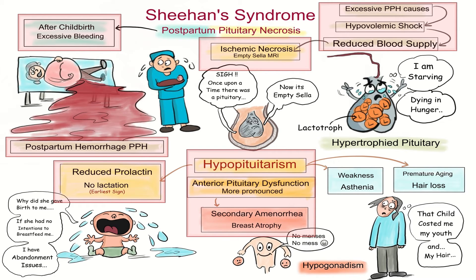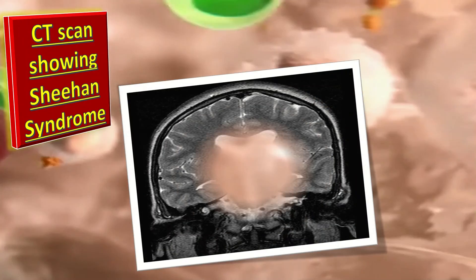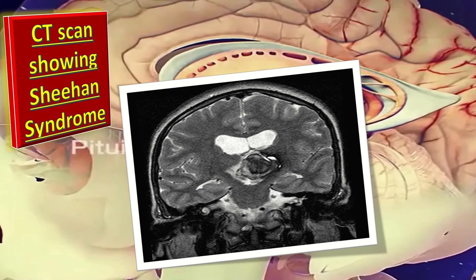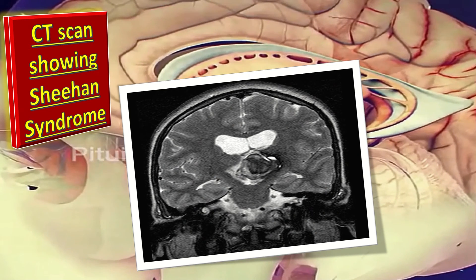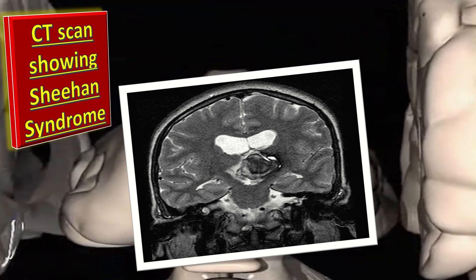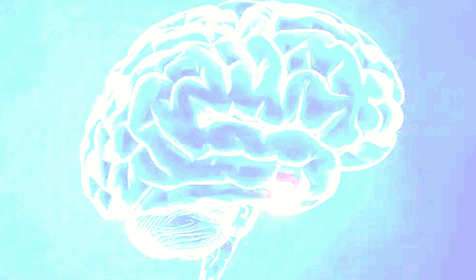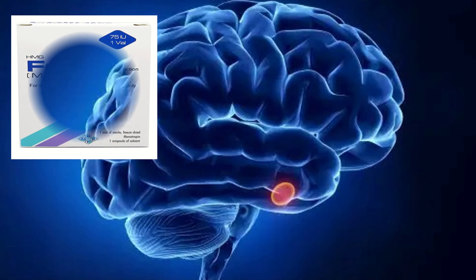Reduced prolactin or absence of lactation is the earliest sign of Sheehan syndrome. Later on, there is pituitary atrophy resulting in weakness, premature aging, and hair loss. This CT scan of the patient shows an enlarged pituitary with rim enhancement and no internal enhancement — findings suggestive of non-hemorrhagic pituitary infarct, that is Sheehan syndrome.